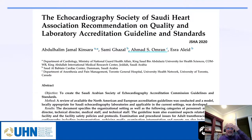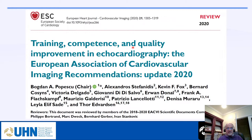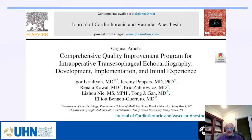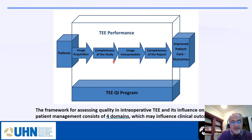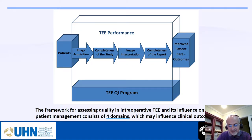For these 290 cases I drew on my experience in accreditation in Saudi Arabia, a paper from the European Association of Cardiology on TEE team training, and a very systematic QI paper from Sunnybrook in New York. That paper examined four domains: image acquisition, completeness of the study, image interpretation, and completeness of the report. In my assessment I split image interpretation into pre-op and post-op, giving five domains total.